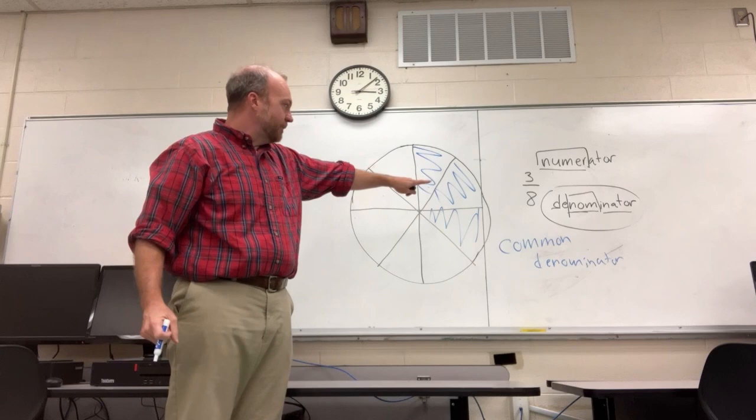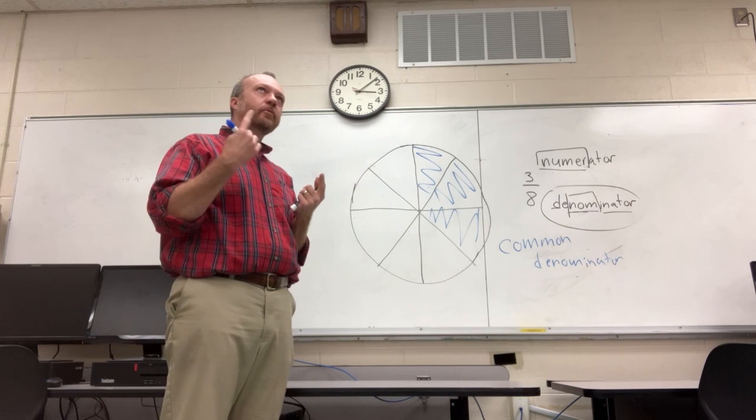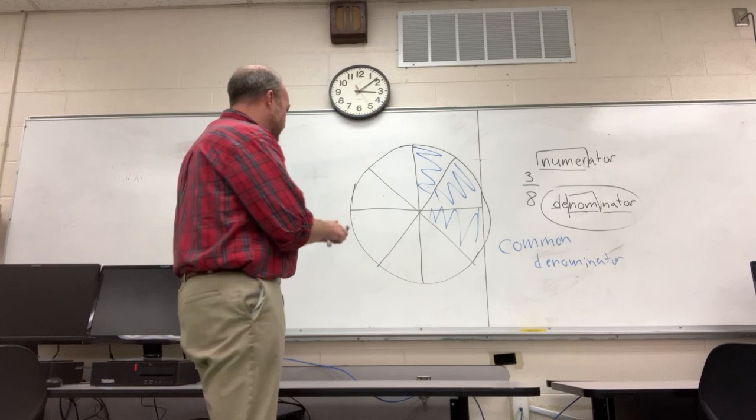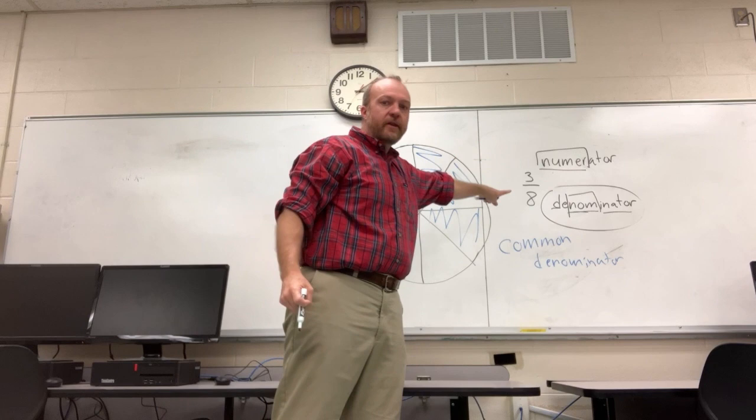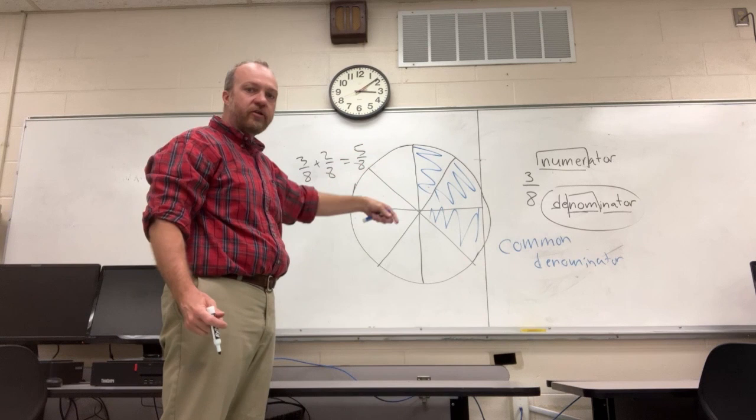So then all they know is that means the same name. So then it's really easy to understand. Three apples plus two apples is five apples. Three apples plus two oranges is five oranges. So three-eighths plus two-eighths is five-eighths. You only add the number. The name stays the same. We're not changing the types of pieces. We're just changing the number of pieces. We're adding them. Likewise, the same thing with subtracting.